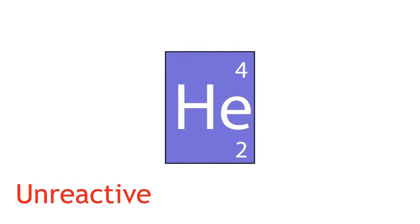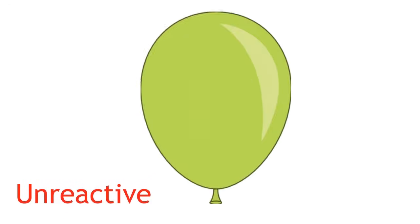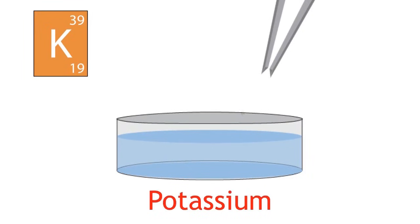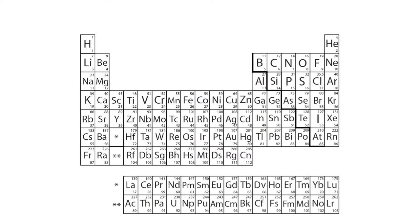For example, some gases are completely unreactive with everything, while some metals have vigorous reactions with water. Properties like these allowed elements to be grouped together.